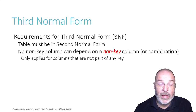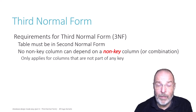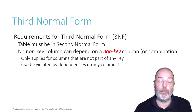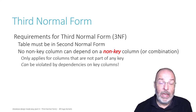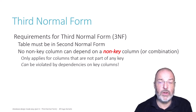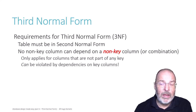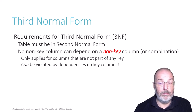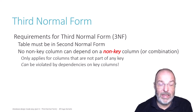The short form is: for the determining column — the column that determines the other column in a functional dependency — you cannot exclude key columns. You can only exclude some cases. We will return to that, but let's start with a simple example that shows the basics.